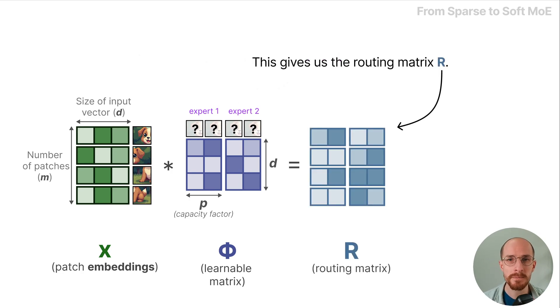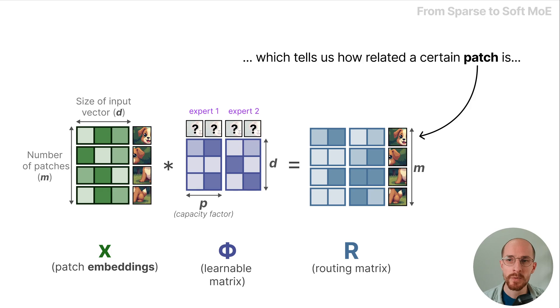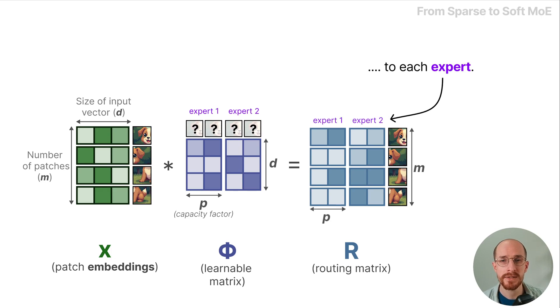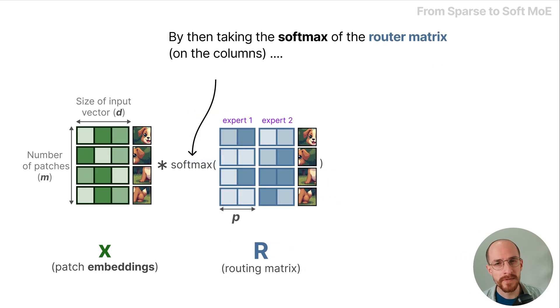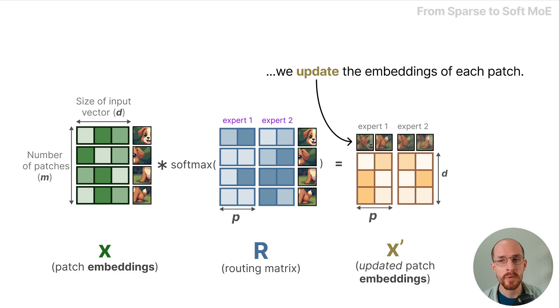This gives us the routing matrix which tells us how related a certain patch is to each expert. By then taking the softmax of the router matrix and we do this on the columns, we update the embeddings of each patch.